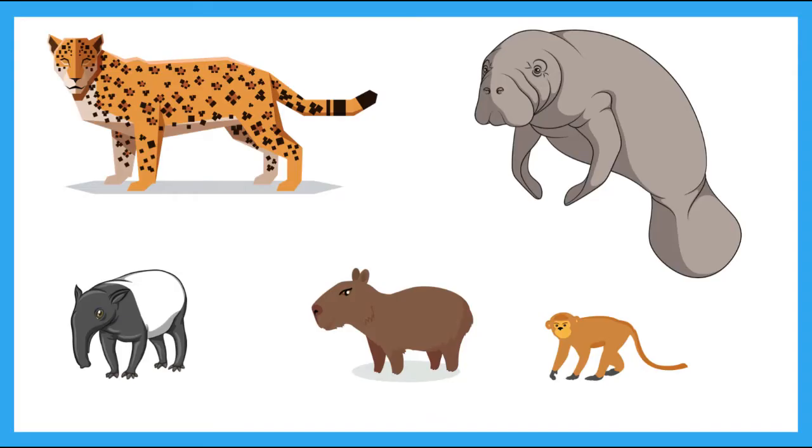Some of the other crazy creatures you might find in the Amazon Rainforest or the Amazon River include jaguar, manatee, tapir, capybara, and monkeys.